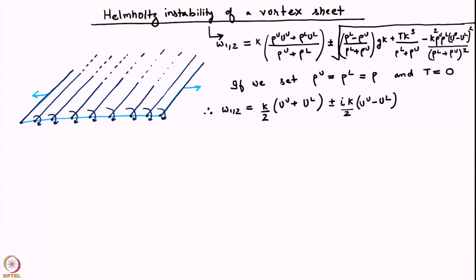In particular we are going to say that we do not have two separate fluids. The density of the upper fluid and the density of the lower fluid are the same — rho_u equals rho_l equals rho — so we just have a single fluid. Consequently, we also do not have any surface tension, so T equals zero.